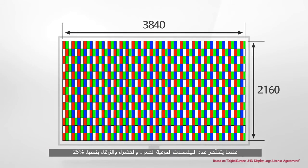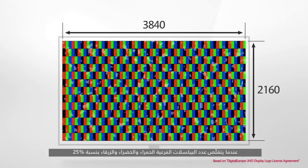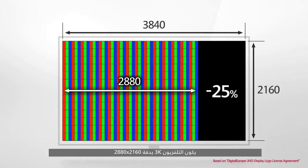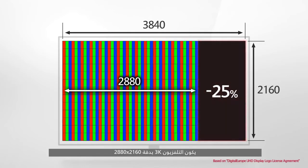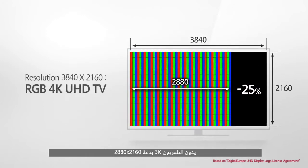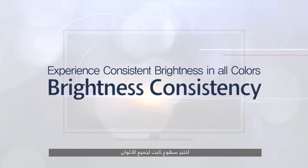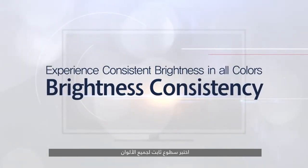The fact that the number of R, G, and B subpixels decreased by 25% means that this is a 3K television with a resolution of 2,880 by 2,160 — well below the standard for 4K.